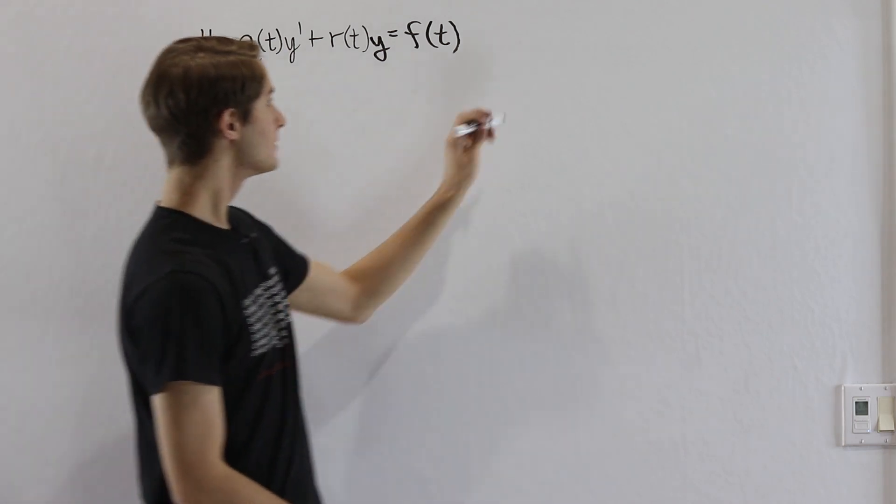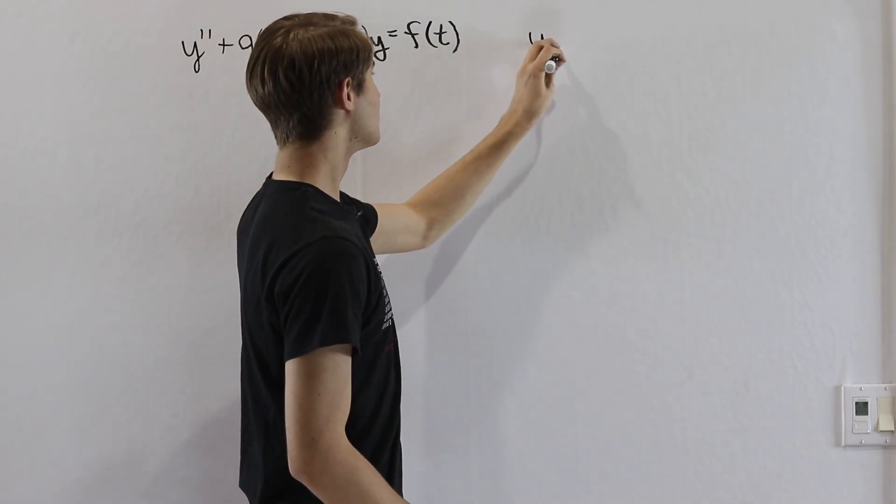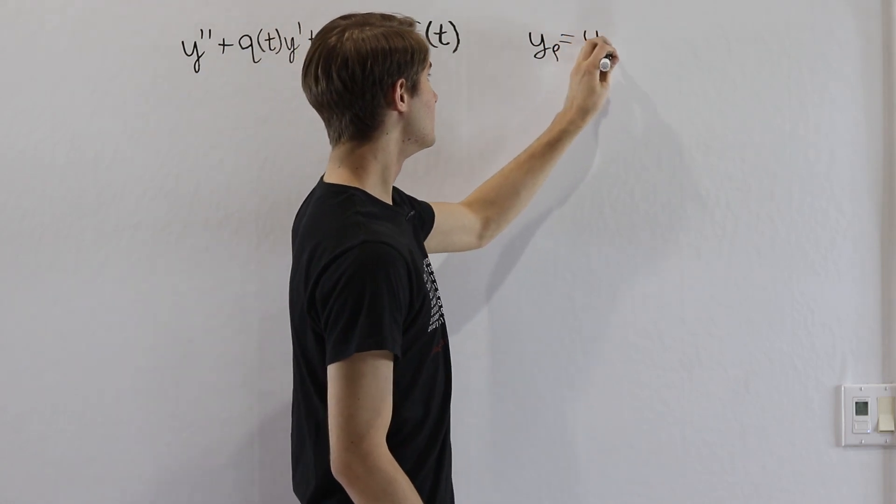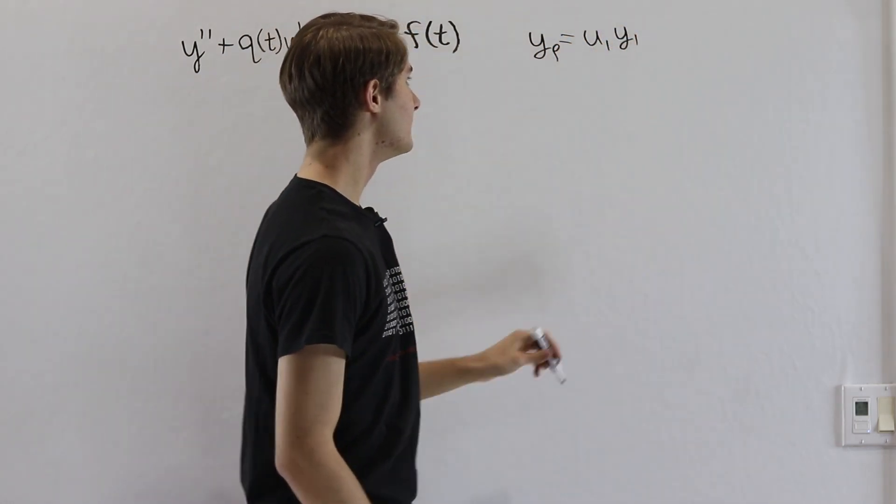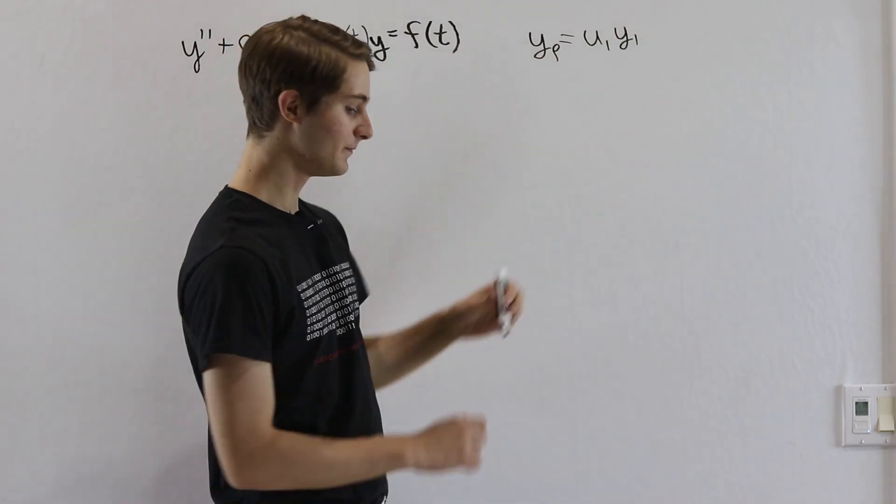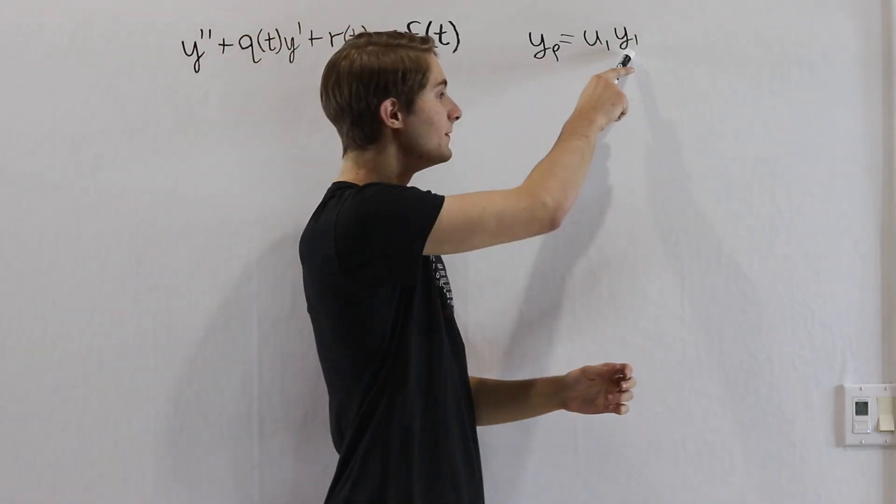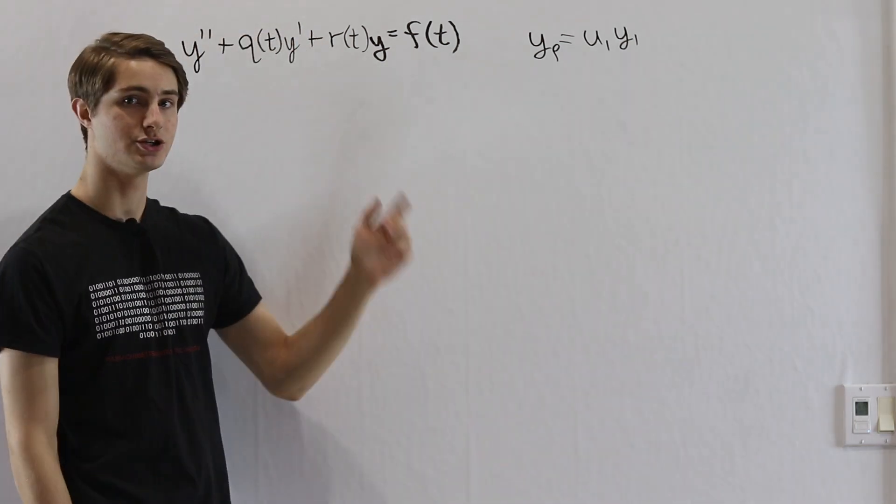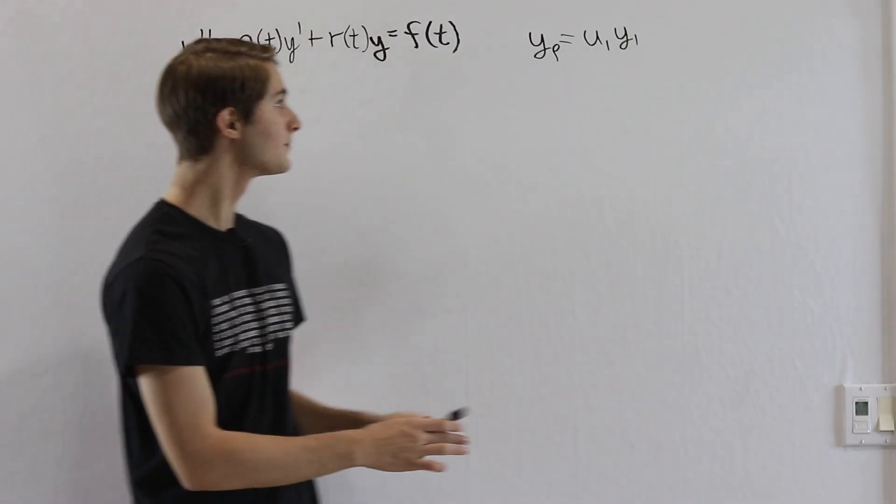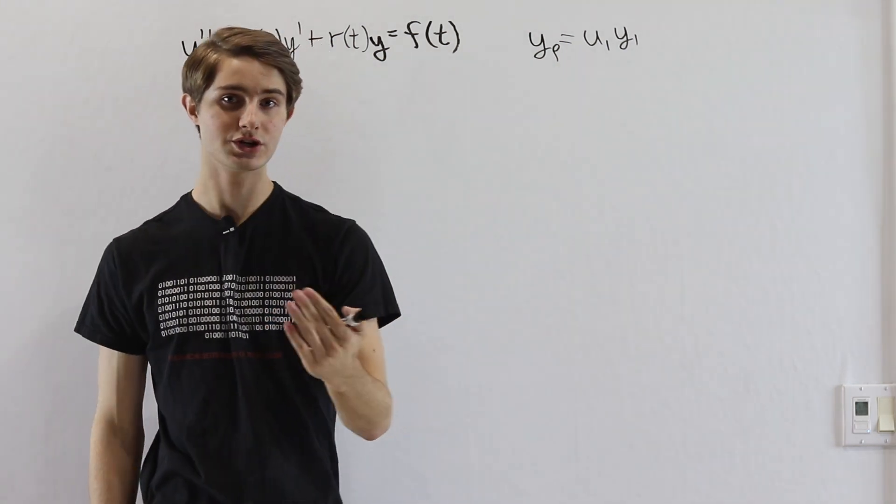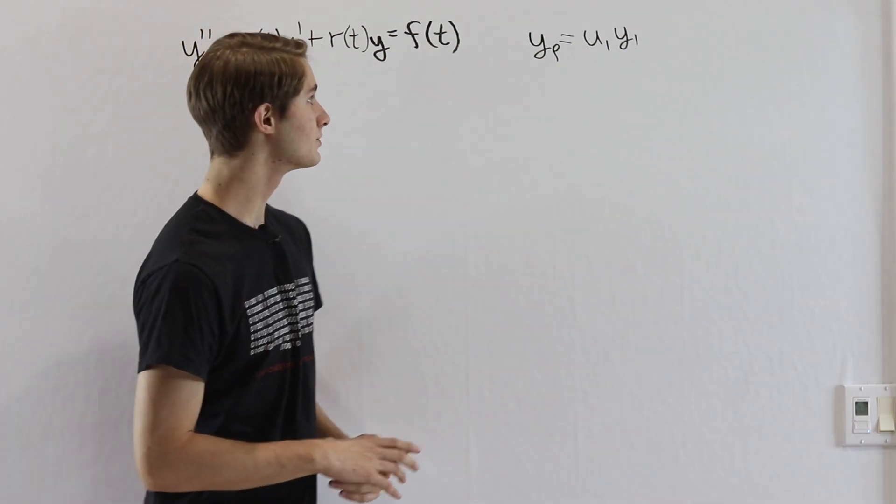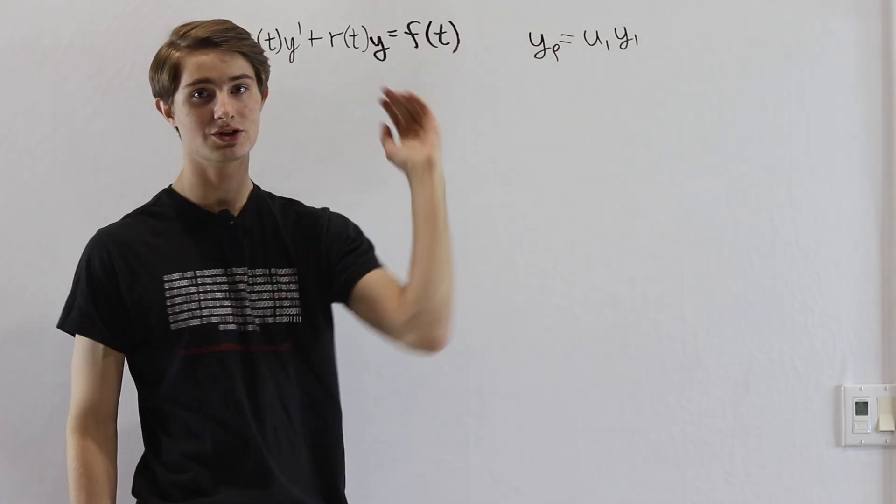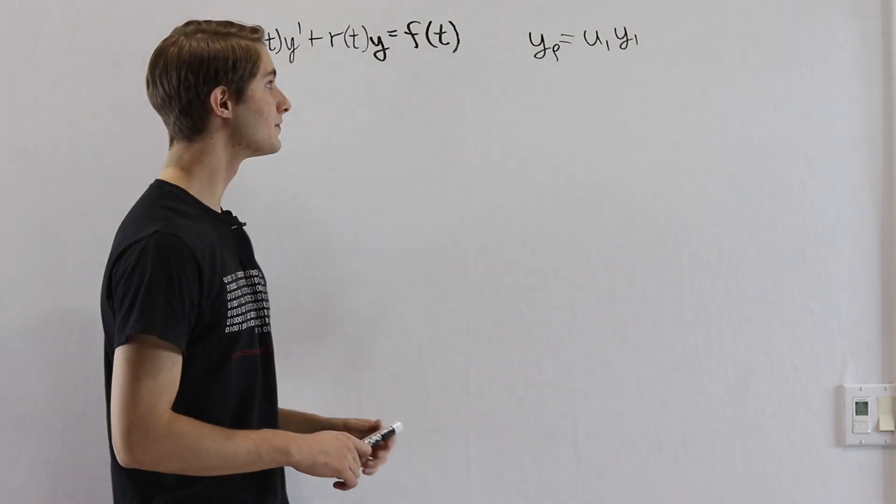Once we do that, we're going to say the particular solution for y is equal to some function u1 times y1. In this case, y1 is going to be one of the homogeneous solutions to this equation, or one of the complementary solutions. And u1 is the function that we're trying to solve for, because once we solve for u1, we can just multiply it by our homogeneous solution and get our answer out.